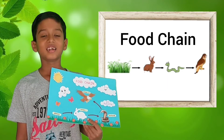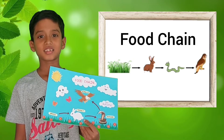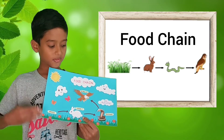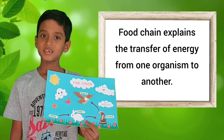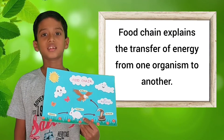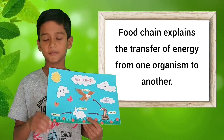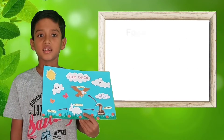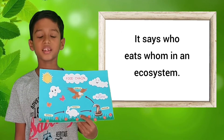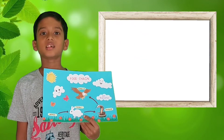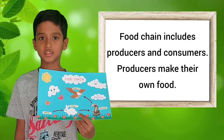Hello everyone, today I am explaining my science project. The topic is food chain. So what is food chain? Food chain explains the transfer of energy from one organism to another. It says who eats whom in an ecosystem. Food chain includes producers and consumers.